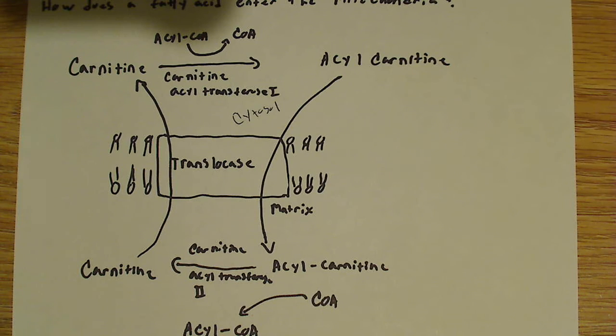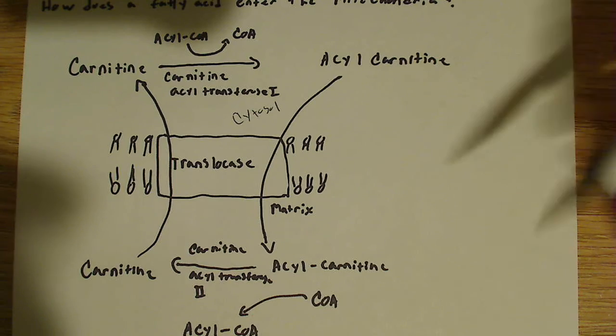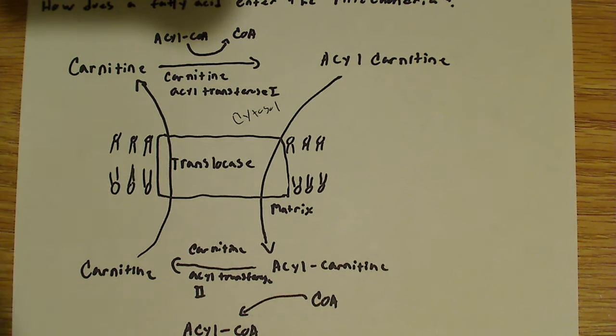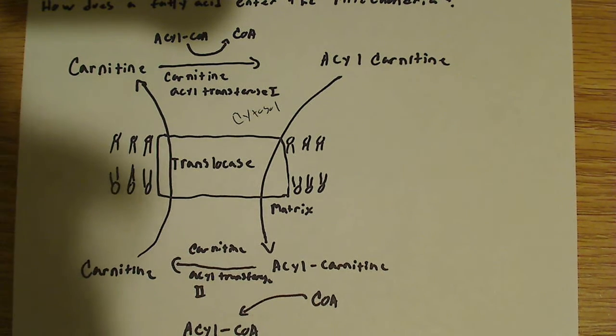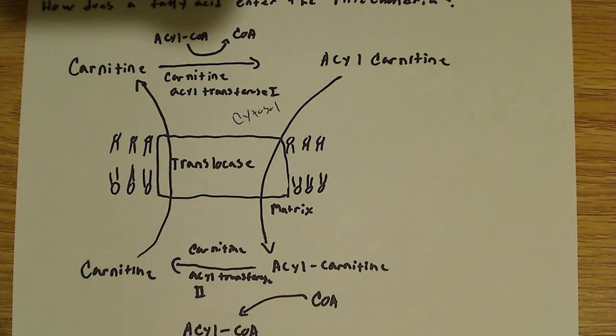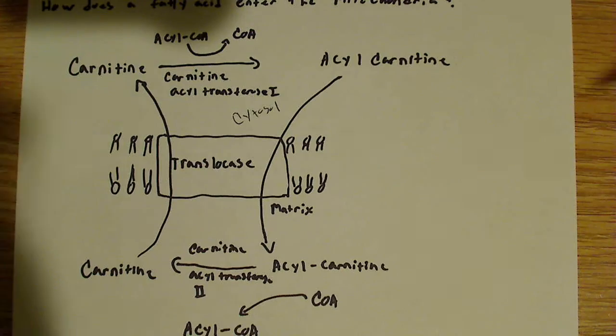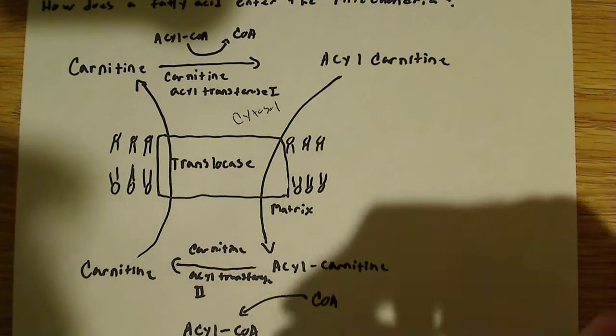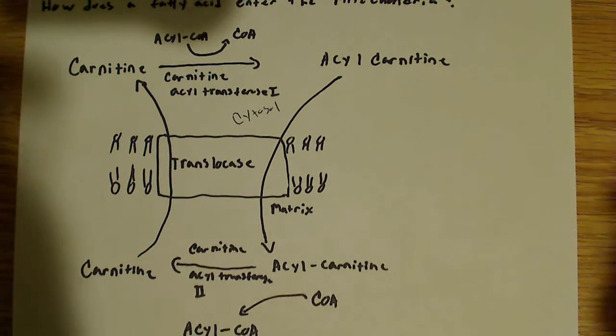So that's how this entire process works. I mean, it looks complex, but all you're doing is taking the CoA off the acyl group, putting carnitine on. The acyl-carnitine is permeable, can cross the membrane. Crosses the membrane, it's removed by essentially the reverse reaction, and then the carnitine is transported back across the membrane and the acyl-CoA ends up in the mitochondrial matrix where you want it.